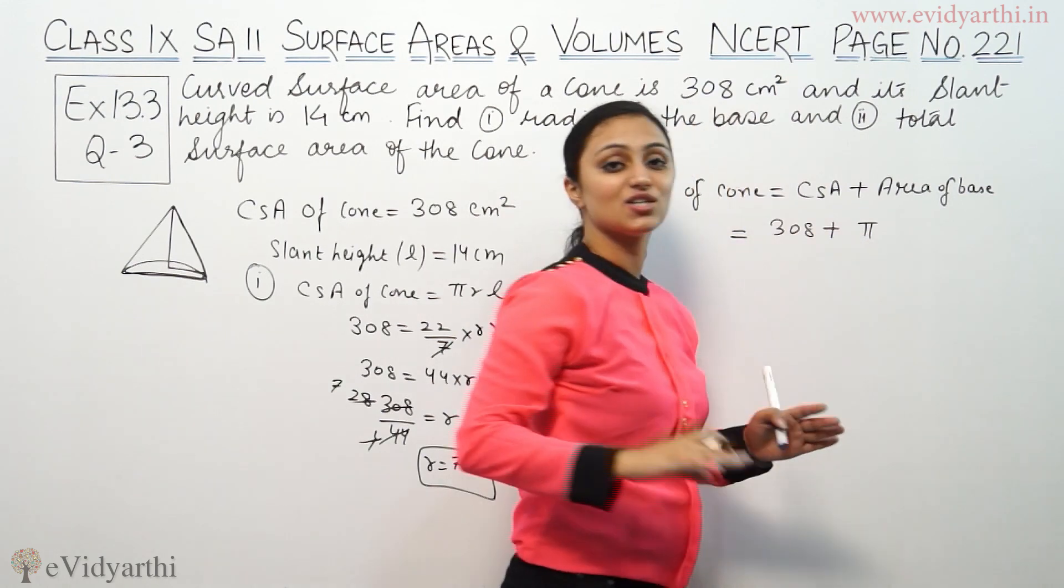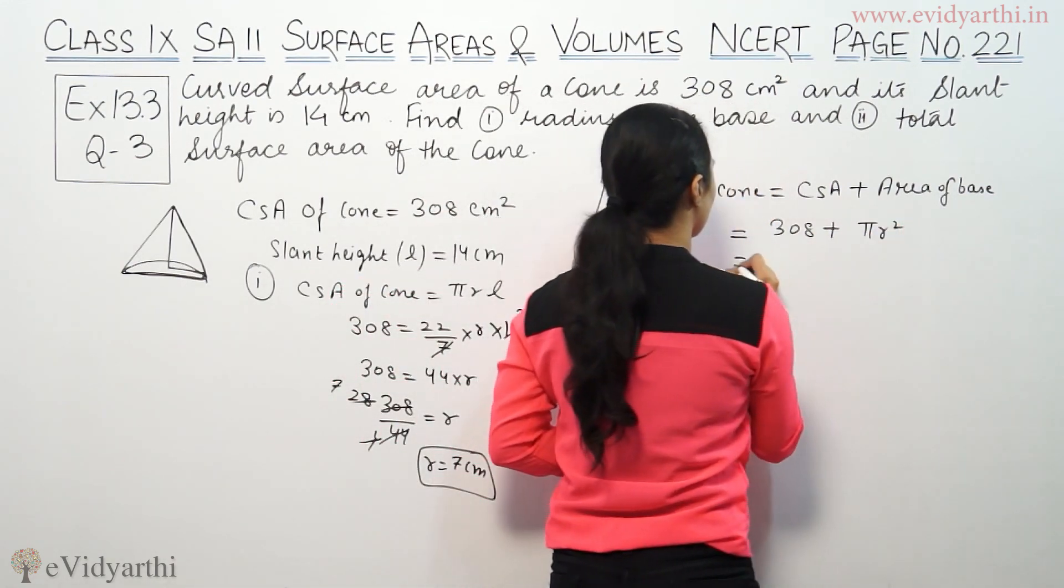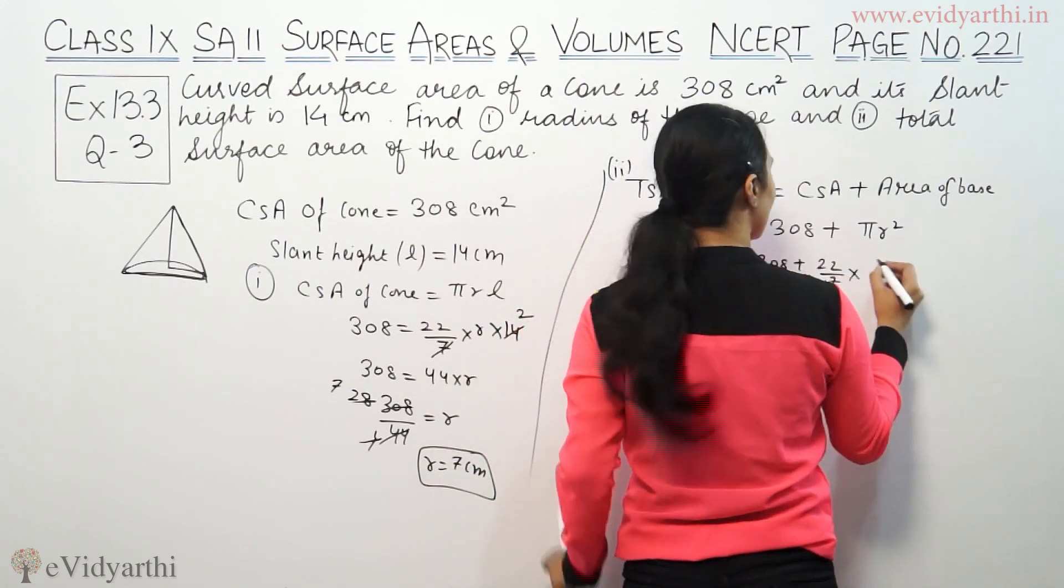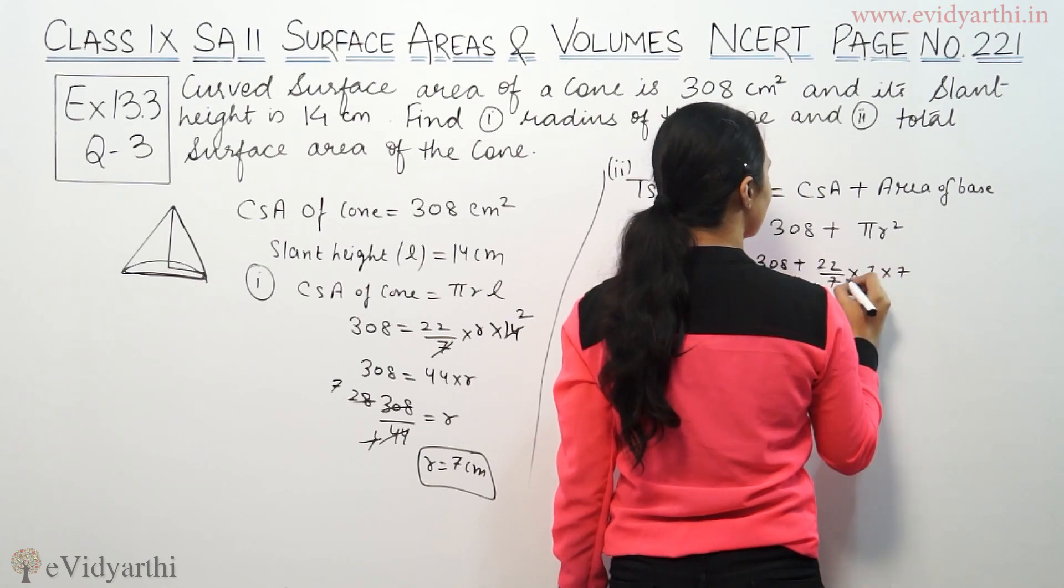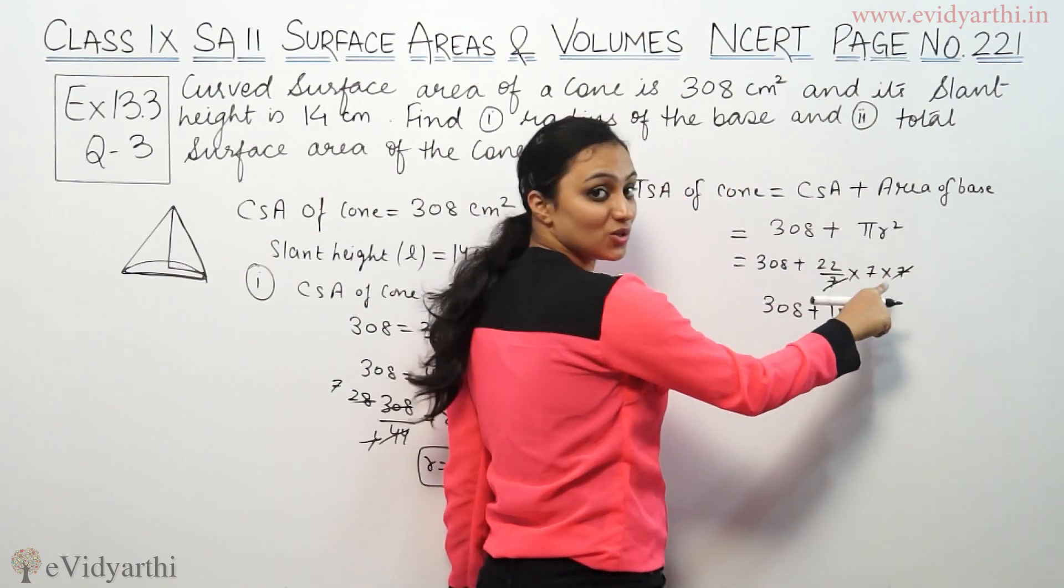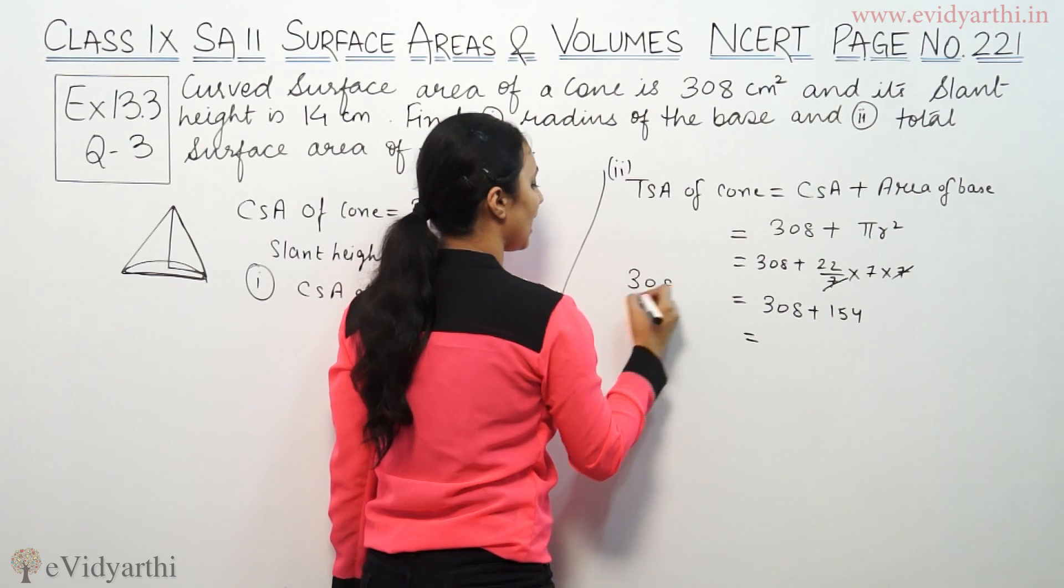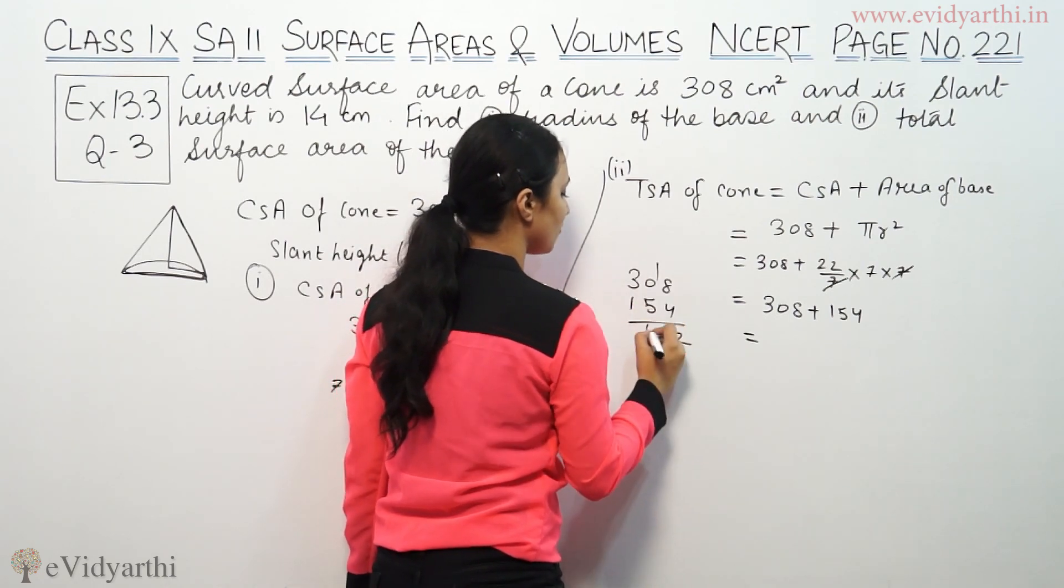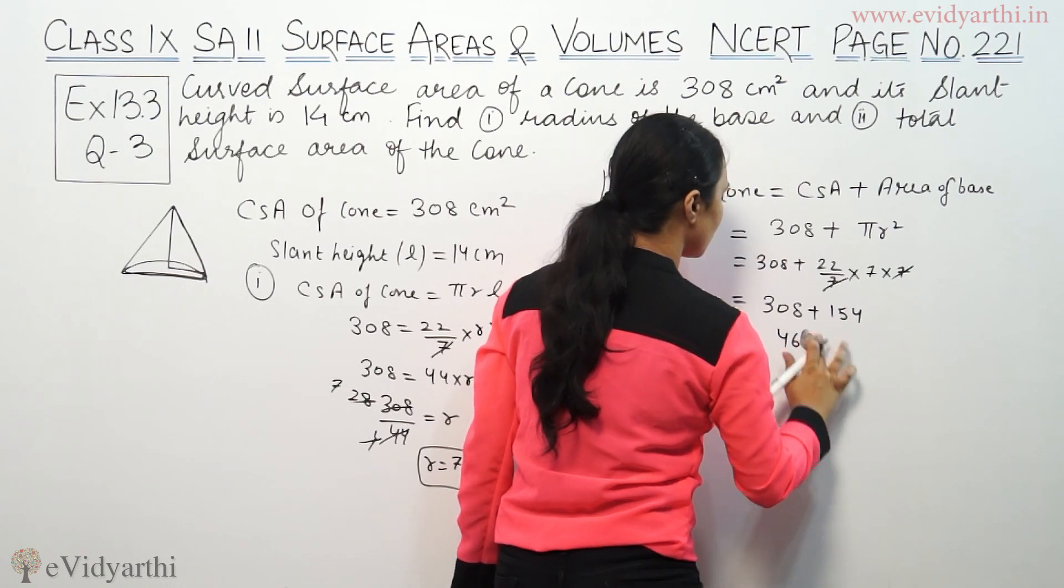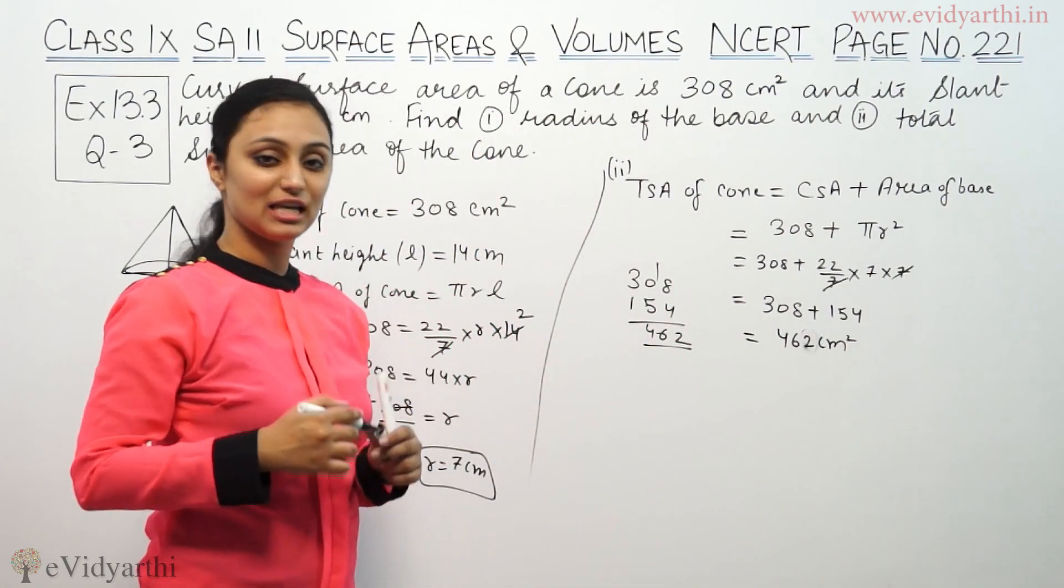Then we have to find the total surface area. Area of base means circular area of πR². So 308 plus 22/7, previous value defined here is 7, so 7 multiplied by 7, and we cancel. 308 plus 154, 22 multiplied by 7 is 154. So we add here. This is the total surface area of the cone.